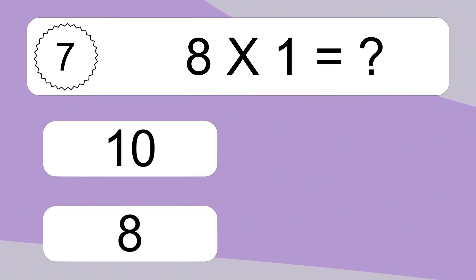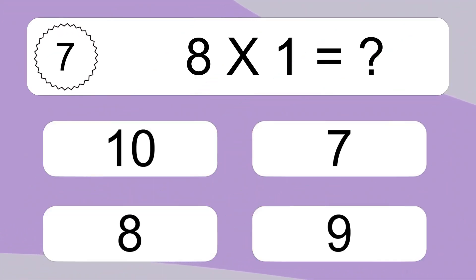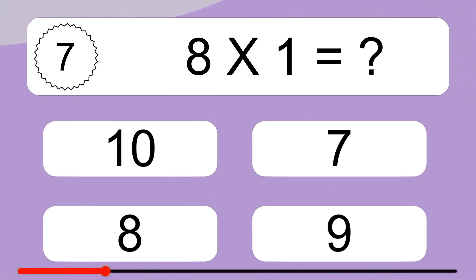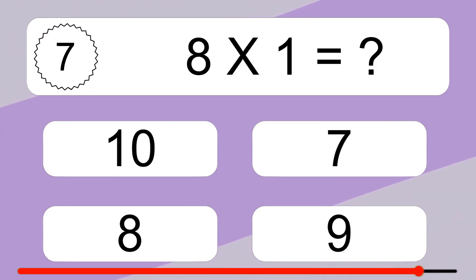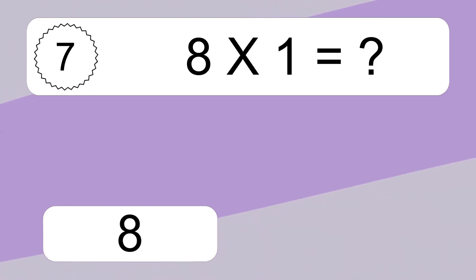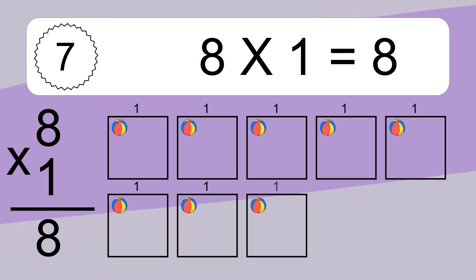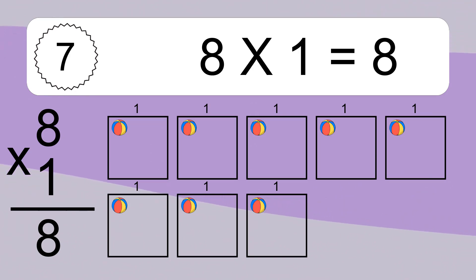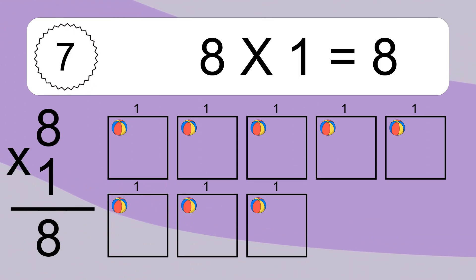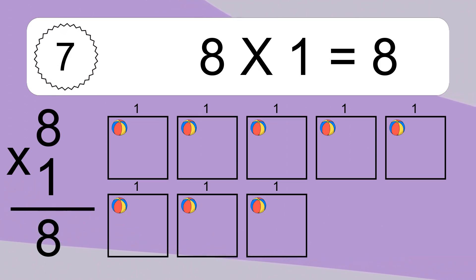8 times 1 equals what? We have 8 boxes, and each box has 1 colorful ball inside. If you count all the balls in all the boxes together, you will have 8 times 1 balls. This equals 8 balls.